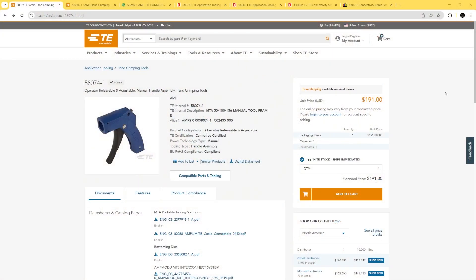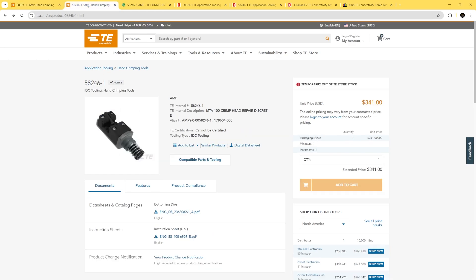So I've got the TE connectivity site pulled up here, and this is the manufacturer of the tool. You can see it's a darker blue, and that's just because it's newer. I have an older one. But that's $191 just for the handle on their website. And if you go and find the crimp head tool, that one is where you're going to spend the money. So that's $341. So you're looking at over 500 bucks just for the tool, the two pieces.